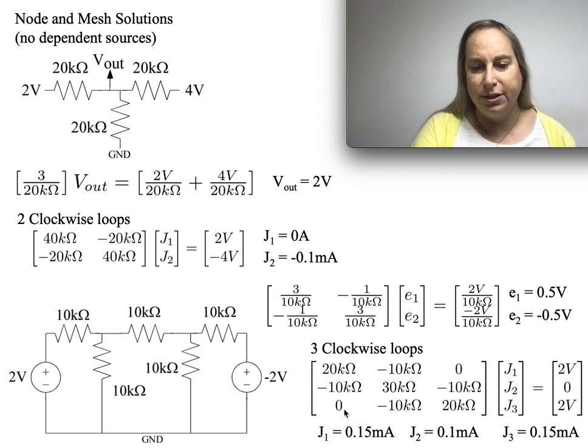Given that there's no dependent sources, these matrices should be symmetric, so everything should work fine. And what's in between loop one and loop two is one 10K, and what's in between loop two and three is a 10K.